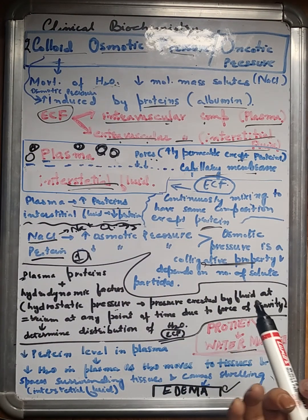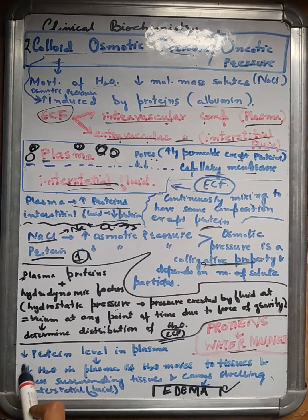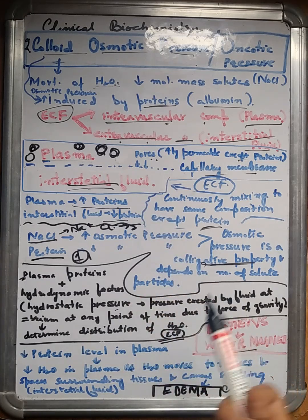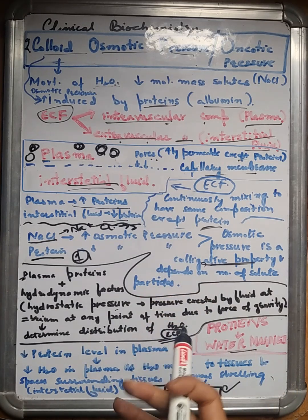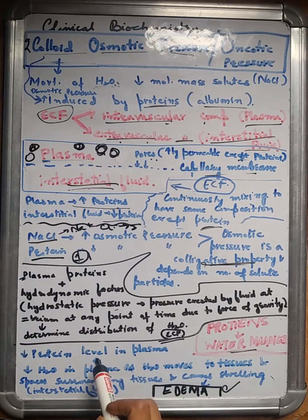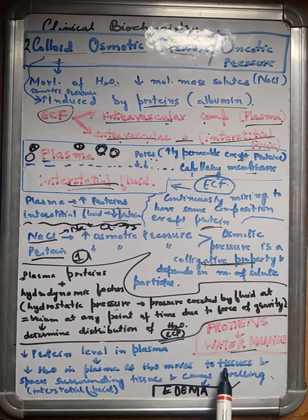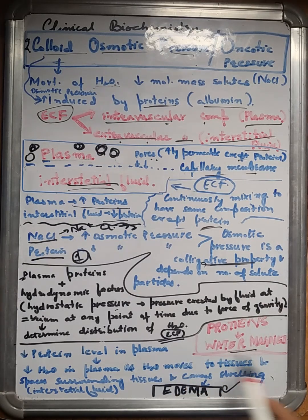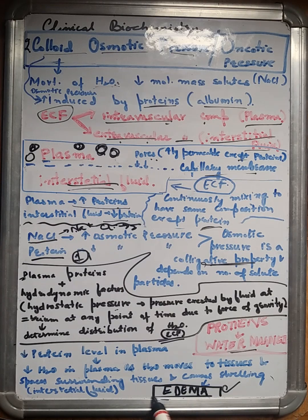So if during any pathological condition, during any disease, there occurs less concentration of protein level in the plasma, that means less water will be available in the plasma. This water will try to move from the plasma towards the other tissues or surrounding spaces. When this water moves from the plasma towards the surrounding spaces, it will cause swelling in the surroundings that's known as edema. We can define edema as the accumulation of water in the interstitial fluid.